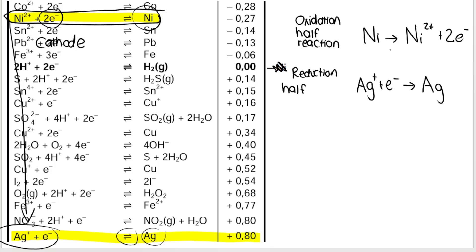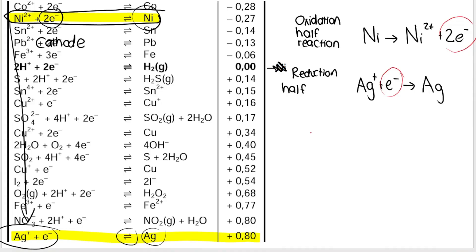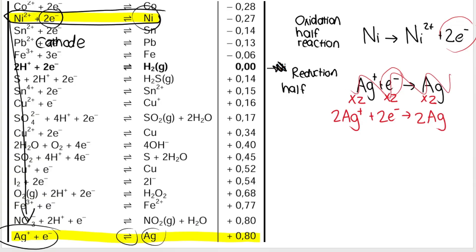Now we want to write the net reaction, but in this case I have two electrons in the oxidation half reaction and only one electron in the reduction half reaction. So before we cancel them and rewrite the final equation, we need to balance the electrons. I need to make the one electron become two, so I multiply the reduction half reaction by two — but if I multiply by two, I must multiply everything by two. So the new balanced reduction half reaction is: 2Ag⁺ + 2e⁻ → 2Ag.